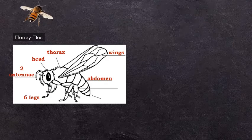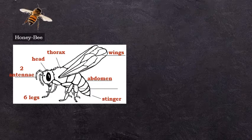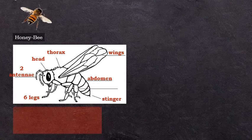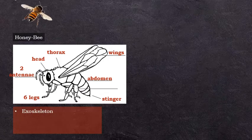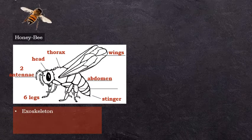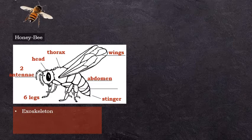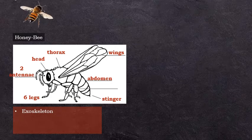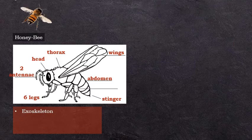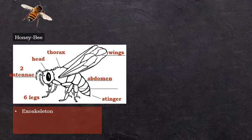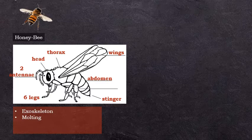Female bees have a stinger on their tail. Insects are invertebrates but they have an outer covering protecting their bodies called an exoskeleton. This exoskeleton doesn't allow the growth of the insect, so the insect sheds it several times during its lifetime. That's what we call molting.